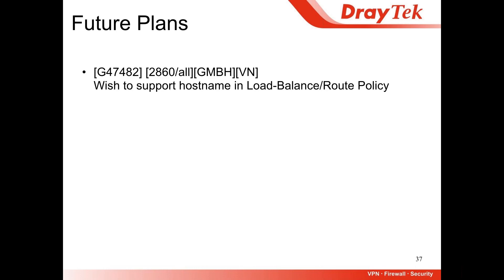Now I'll talk about future plans. We will support hostname in route policy, and also wildcard. In a future route policy, you can type for example 'google.com, send through WAN1' — the router will check all traffic going to www.google.com or mail.google.com and send it to WAN1.